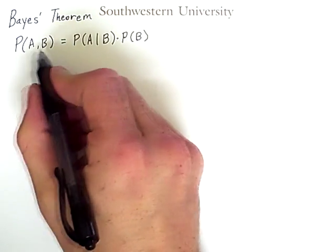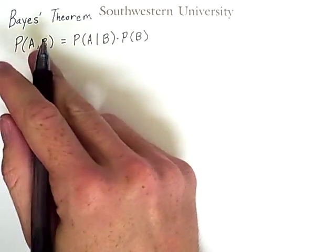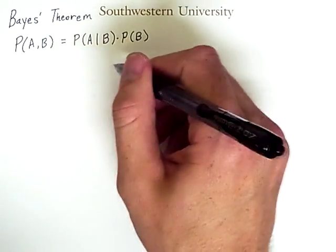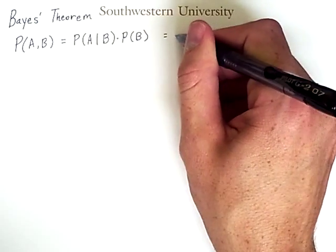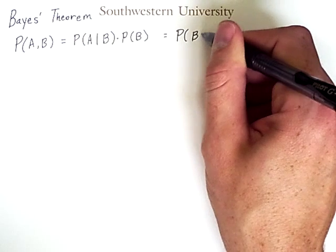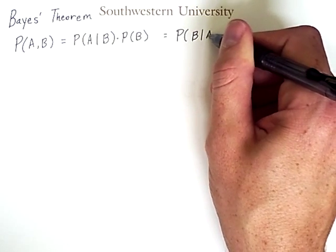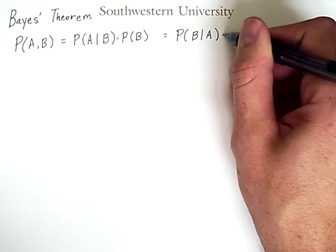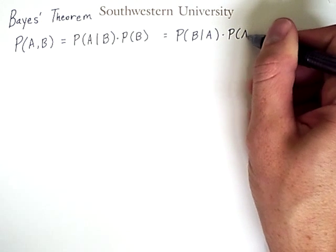Of course, when two things are true, we can swap the order around without consequence. So this is also equal to the probability of B given that A is true times the probability of A.